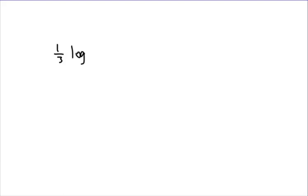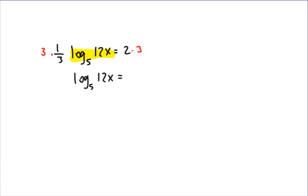Let's look at this problem. What if I've got one-third log base 5 of 12x equals 2? The goal is to solve for x. The easiest thing to do is to get the logarithm by itself, and in order to do that, we're going to multiply both sides by 3. When I multiply both sides by 3, what I end up with is log base 5 of 12x equals 6.